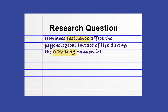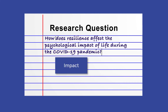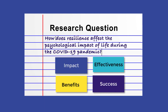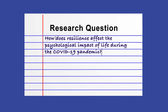But what about psychological impact, or just impact? While it's tempting to include terms like impact, success, effectiveness, and benefits into your search, leave these out. They'll cause you to miss articles if authors don't use the same terminology, and chances are journal articles will address these concepts without needing to search for them.